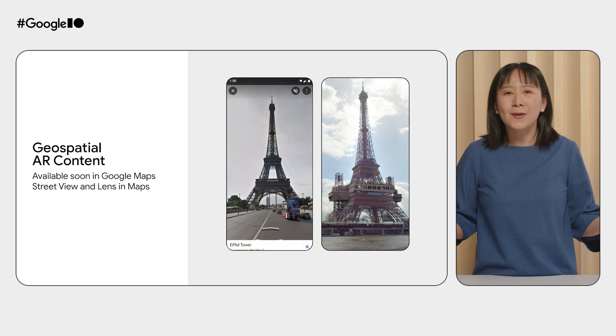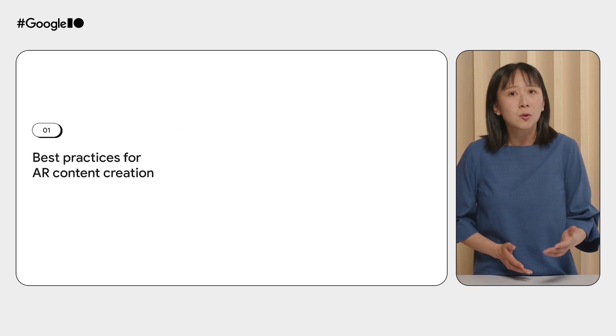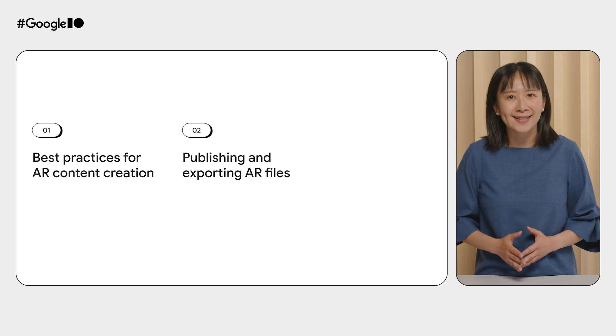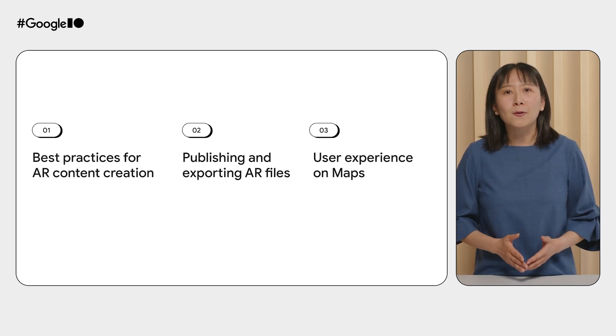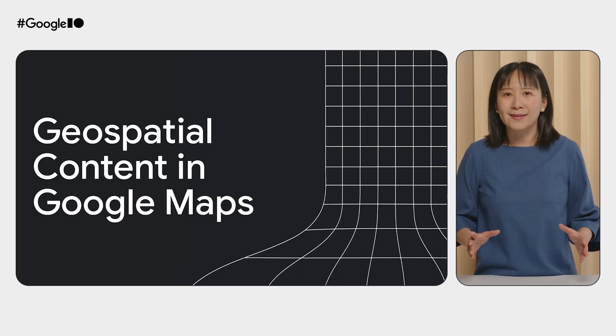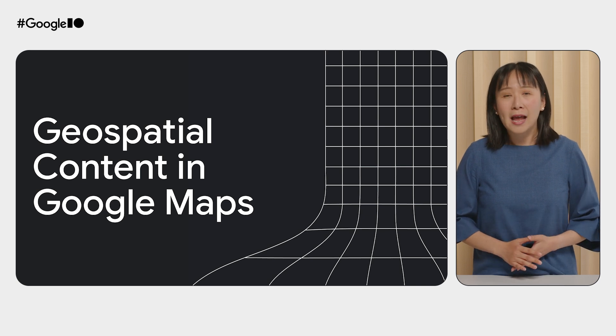Over 1 billion people worldwide rely on Google Maps to get to their destinations and discover the world around them. Soon, users in select cities will see your geospatial AR creations when they're looking for places to go and things to do on Google Maps in your initial six-month pilot. In today's session, Ben will guide you through the AR content creation process with Geospatial Creator and share some geospatial content best practices. He will also cover how to prepare your content into lightweight GLTF file formats that can be rendered on Google Maps. Then, Liz will walk you through how users will see your content on Google Maps, whether they're on location or remote. We will also show some awesome examples from our pilot partners who will bring their geospatial AR content in Google Maps to change how we explore and experience places.